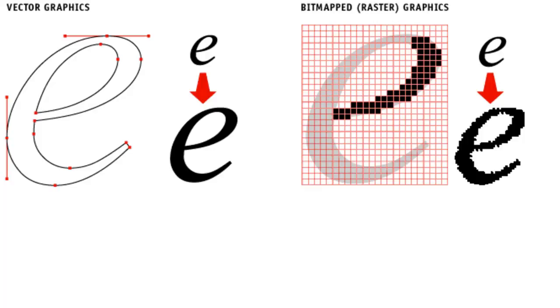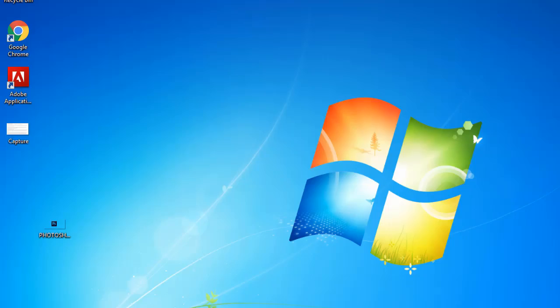Vector images do retain their appearance regardless of the size since mathematical formulas indicate how the image is rendered. We have an example to show you how to check if an image is raster.